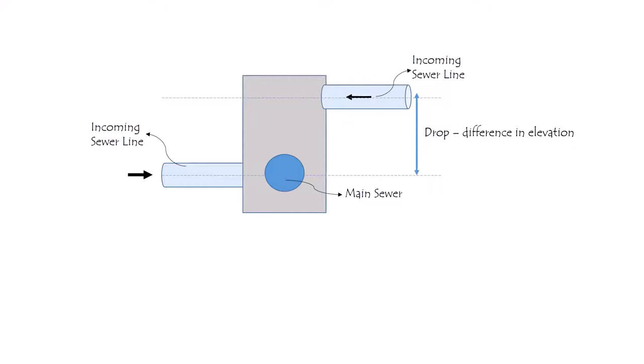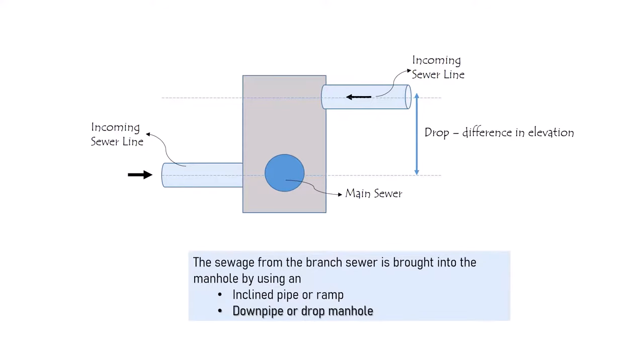This branch sewer connection can be provided in two ways. One way is an inclined pipe, also called a ramp. Another way is to provide a down pipe, which is what we call a drop manhole.